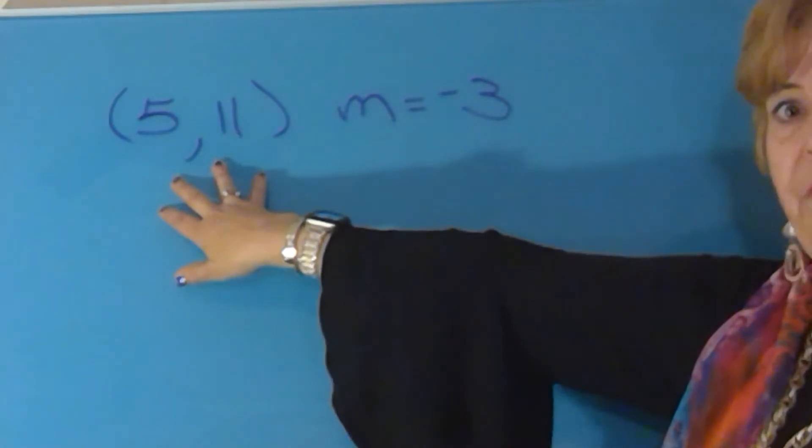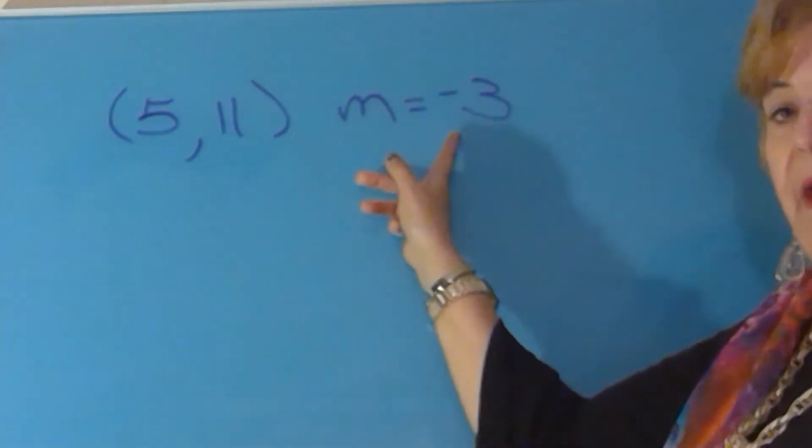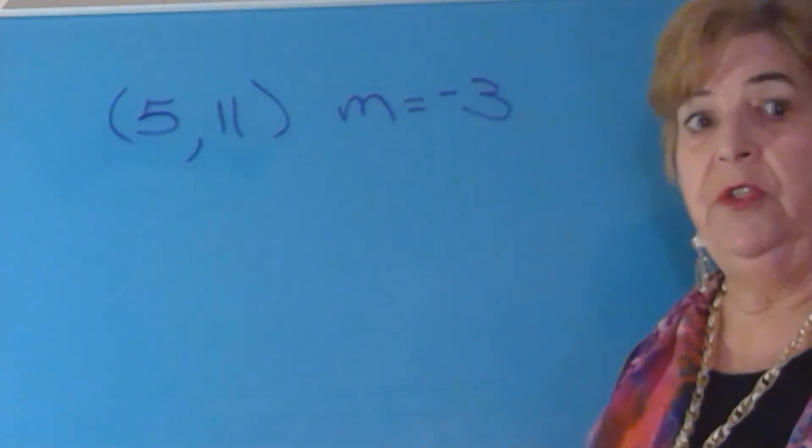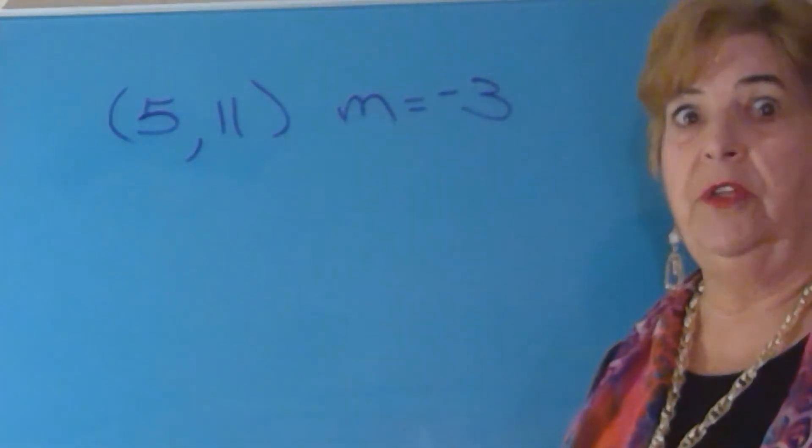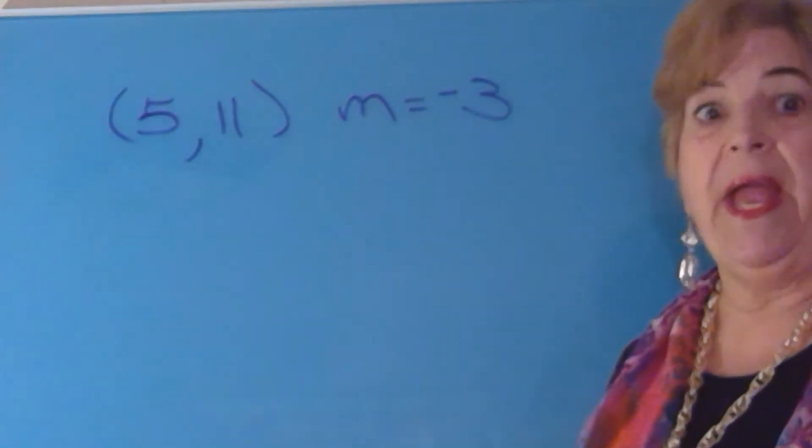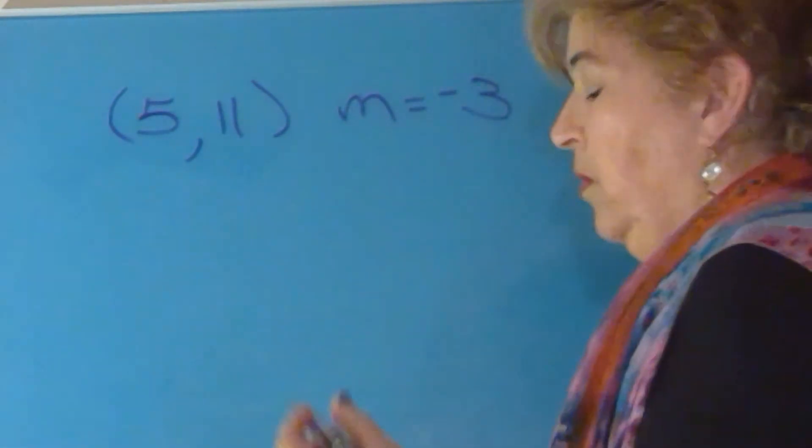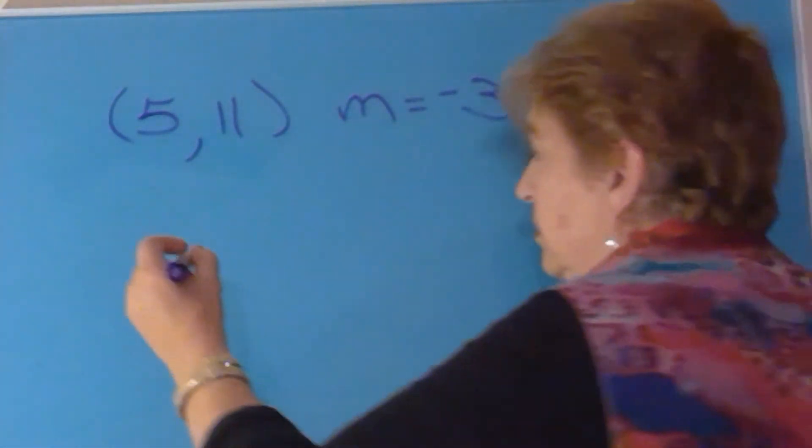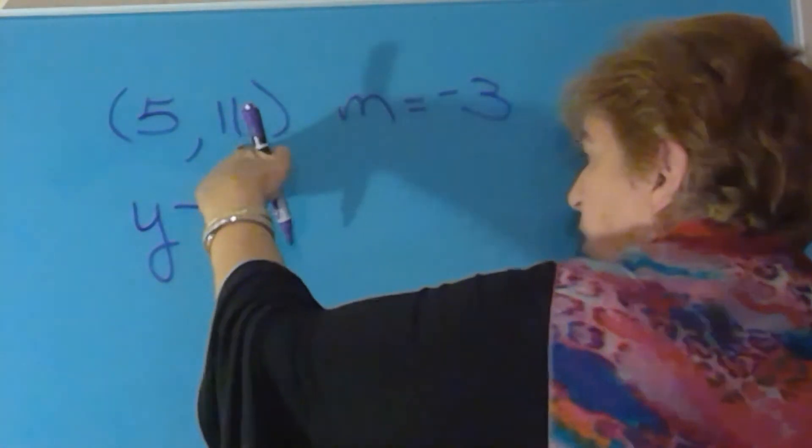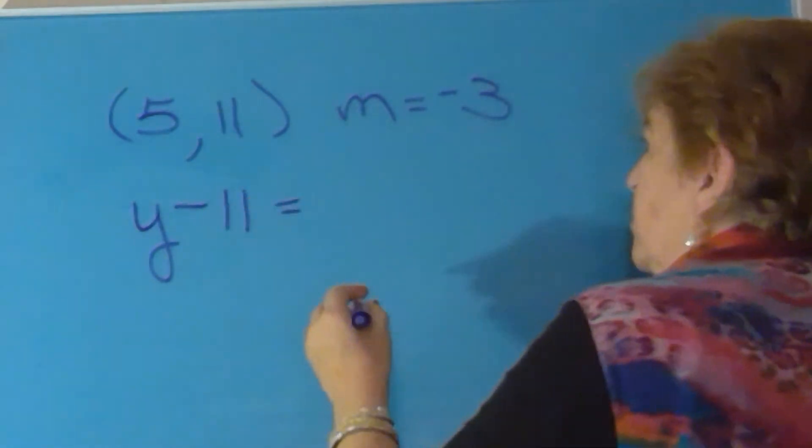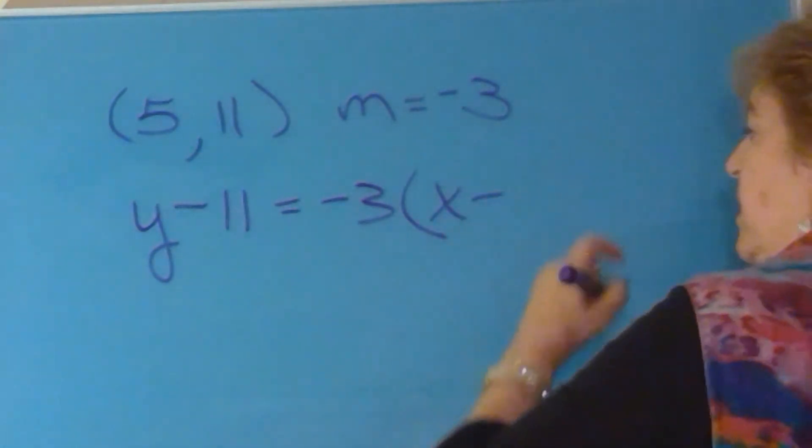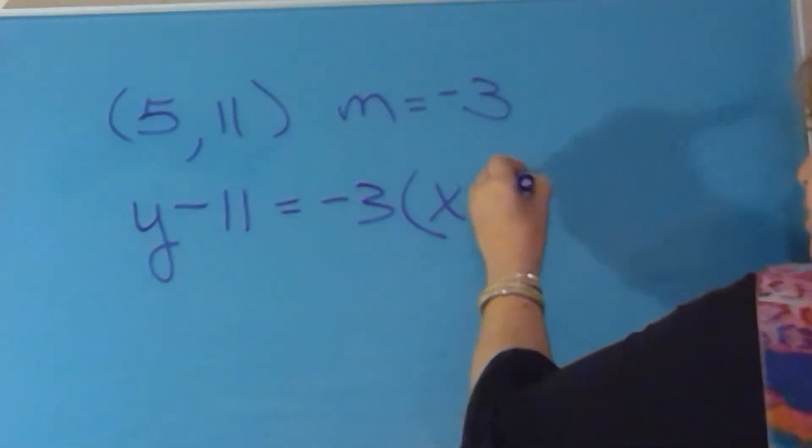The point slope form, you're going to use this point, five, eleven, and the slope, and you're going to start by writing an equation. Then all you had to do is put the equation that you had in slope intercept form, which is the form I asked for your answer to be in. So the point slope form says y minus the y-coordinate, which is 11, equals negative 3 times x minus the x-coordinate, which is 5.